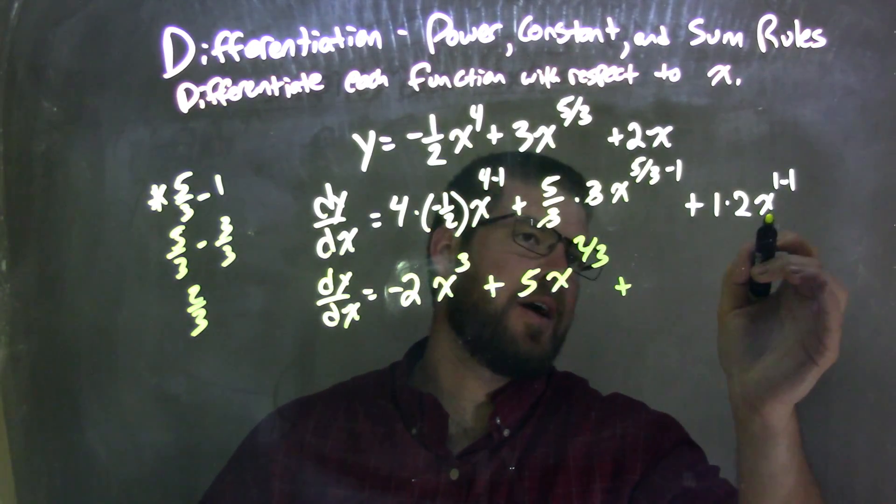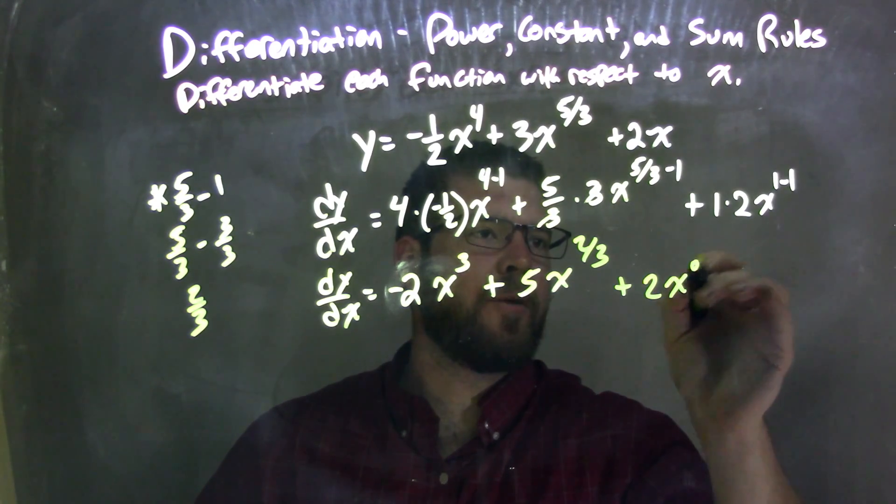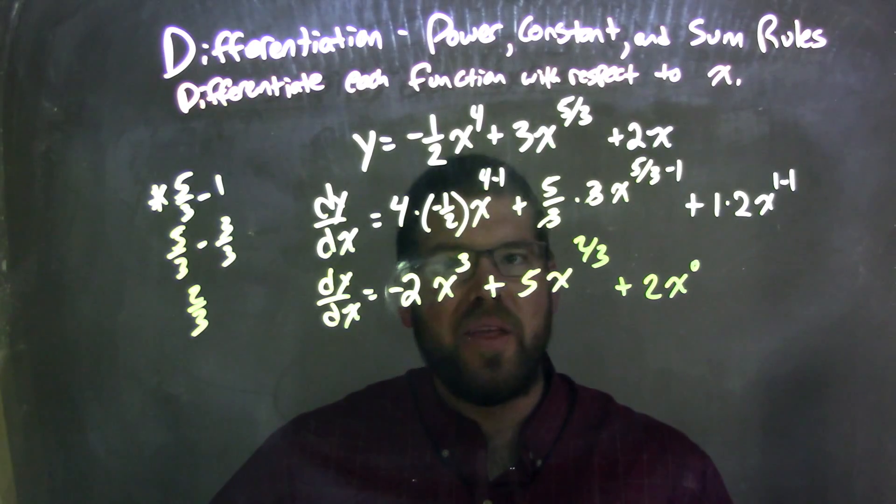Plus this side here, it's just two. One times two is two, x to the zero power, one minus one. So let's do our final little simplification here.